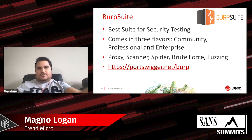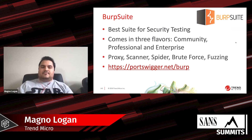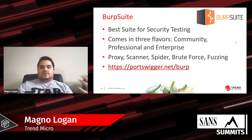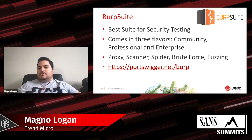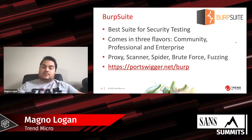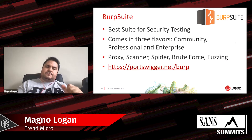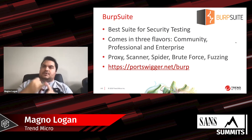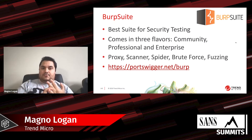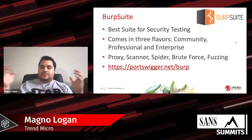Then of course there's Burp Suite — one of the best security tools for application testing and also for APIs. It has an app store with many extensions and functionalities you can add to test APIs, such as the JWT extension Joseph, as Adrian showed earlier this morning. Burp can do proxying, scanning, and spidering your API — for example, if you have Swagger files or OpenAPI documentation listing all your endpoints and the parameters they accept.